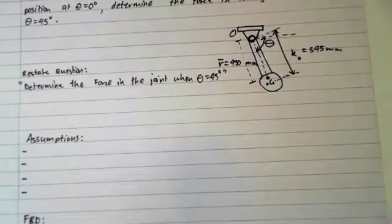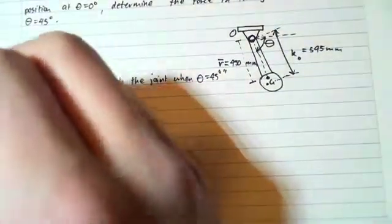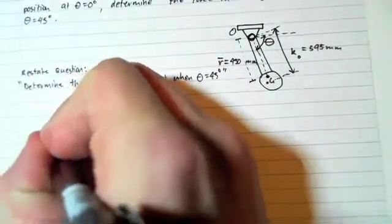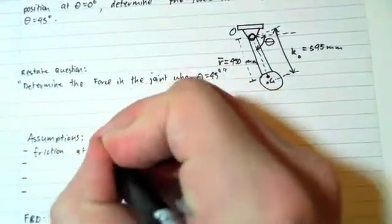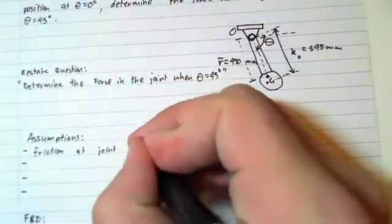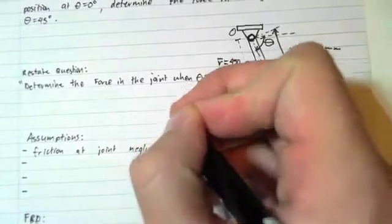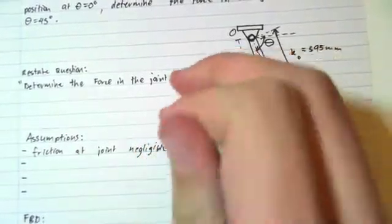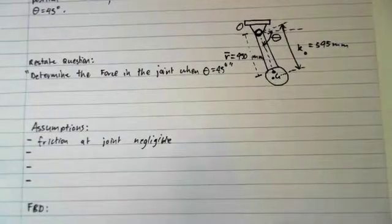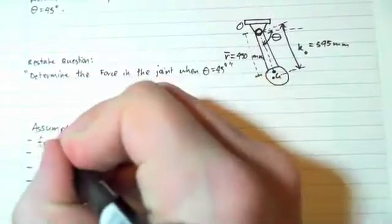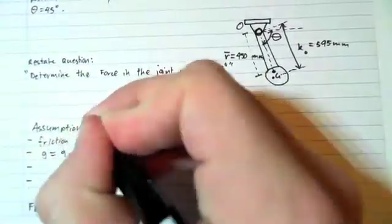Now we have a couple of assumptions that we have to make, and that is that the friction at the joint is negligible. The next thing that we have to do is assume that gravity is 9.81 meters per second squared, which is pretty trivial, but we're going to do it anyway.